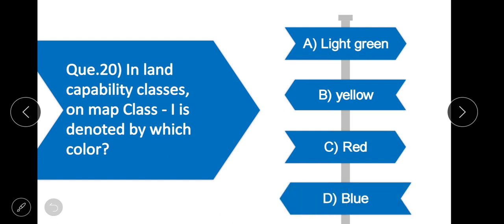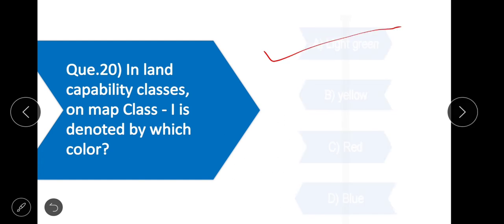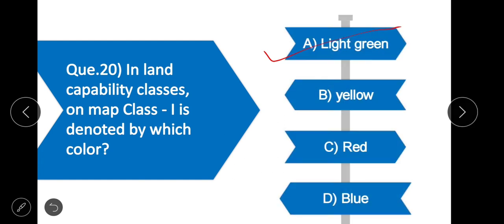Question 20: In land capability classes on map, Class I is denoted by which color? Option A is correct — in land capability classes on map, Class I is denoted by light green color.